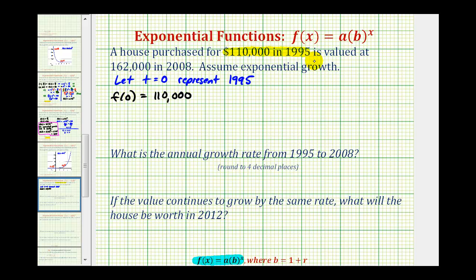Next, the value of the house is $162,000 in the year 2008, and since 2008 minus 1995 is equal to 13, this is telling us that f(13) is equal to $162,000. So again, t represents the number of years after 1995.